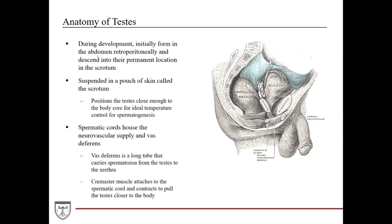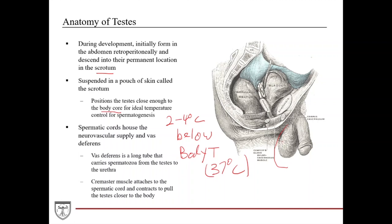The anatomy of the testes: during development they initially form in the abdomen retroperitoneally, and then they actually descend into their permanent location down in the scrotum, traveling quite a distance during development. They're suspended in a pouch of skin called the scrotum, which positions the testes close enough to the body core for the ideal temperature for spermatogenesis to occur, which is about two to four degrees Celsius below core body temperature. They're suspended by spermatic cords.